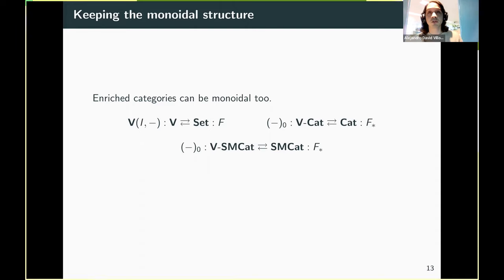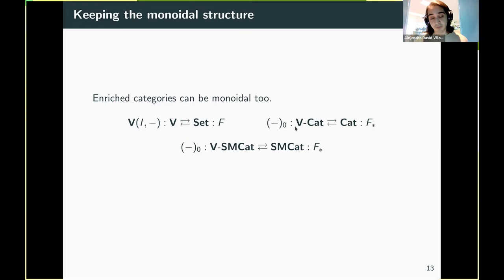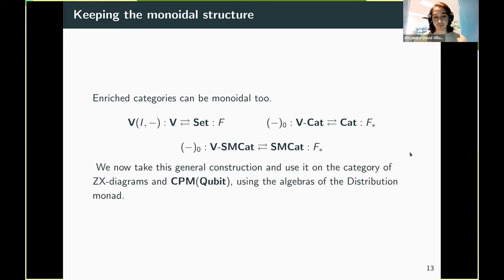The important point is that we are enriching a category over algebras for the monad, but we also want to keep the monoidal structure — we still want to compose enriched diagrams in parallel. We show this can be done: if you have an adjunction where the category turns out to also be symmetric monoidal, then the symmetric monoidal structure is preserved. With this, it allows you to take the category of ZX diagrams — in this case the category of completely positive maps — and enrich it using the algebras for the distribution monad.